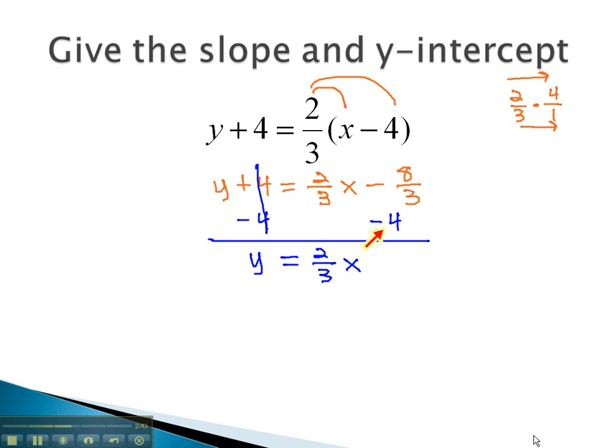But we remember that in order to combine the negative 4 and negative 8 thirds, negative 8 thirds minus 4, we need to subtract the fractions by finding a common denominator. Putting the 4 over 1, we see the common denominator is 3. So we will multiply by 3 over 3, giving negative 8 thirds minus 12 thirds, which is negative 20 thirds.